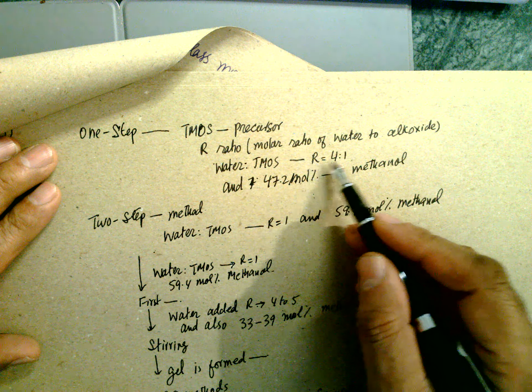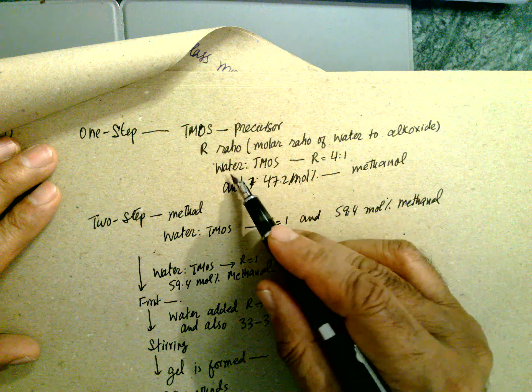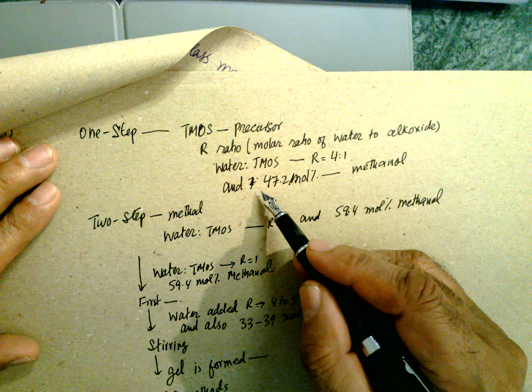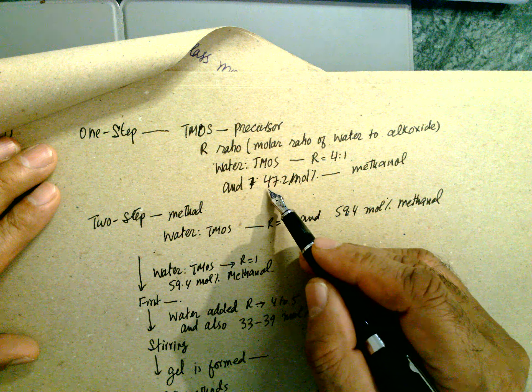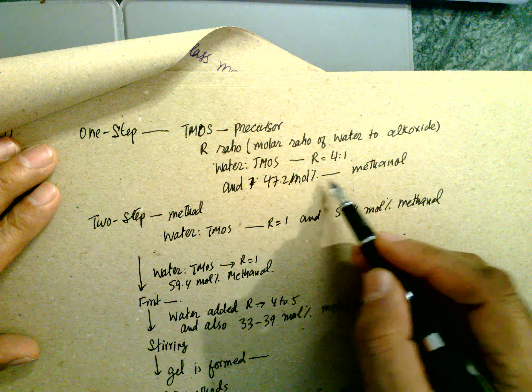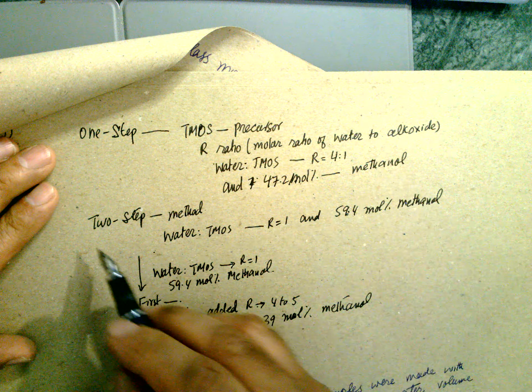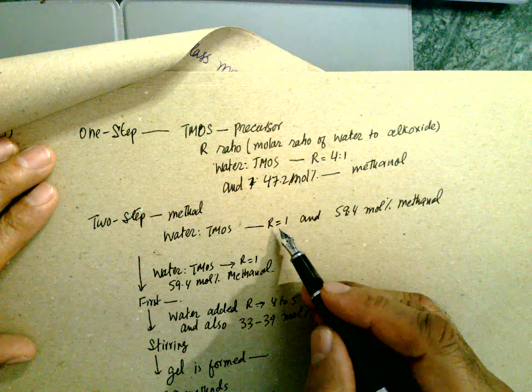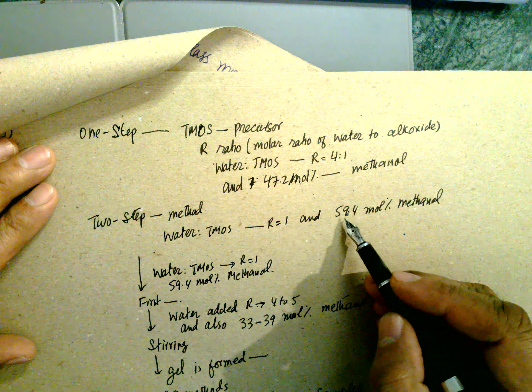R is a ratio of the molecule, molar ratio of water to alkoxide. Water to TMOS is R equals 4 to 1. Water 4 times, TMOS is 1 time, and 47.2 mole percent methanol.